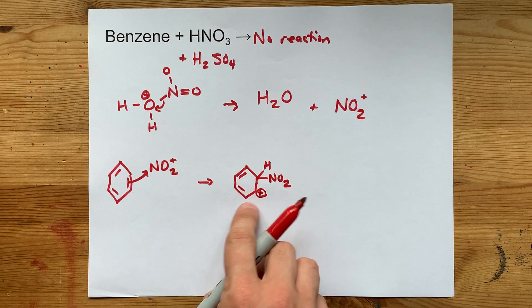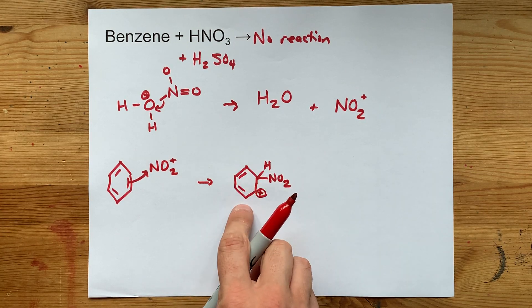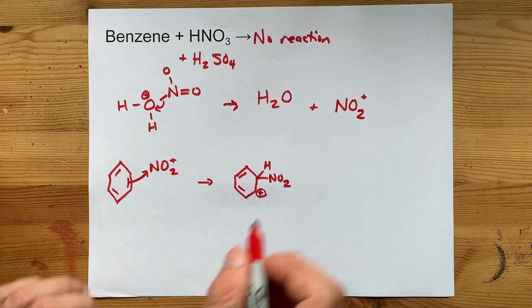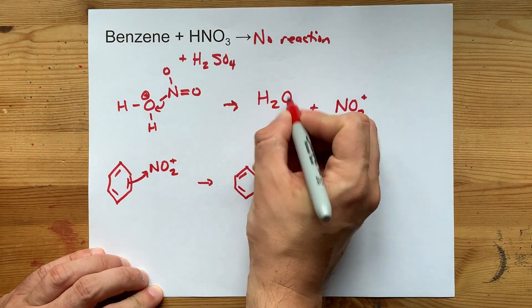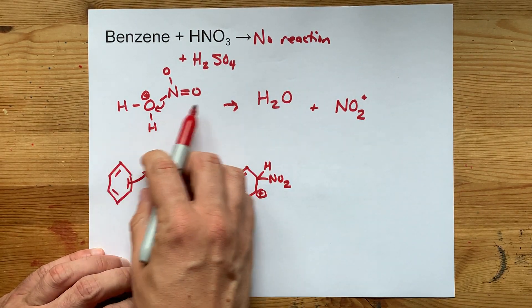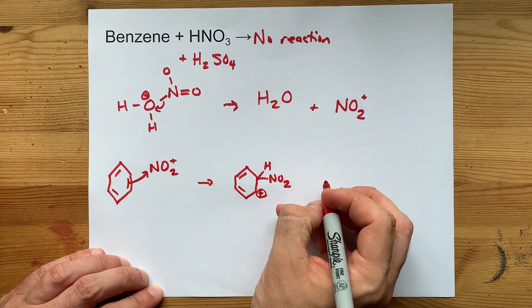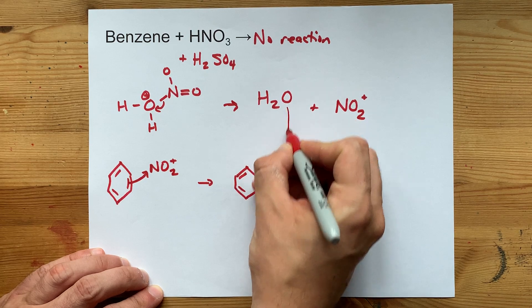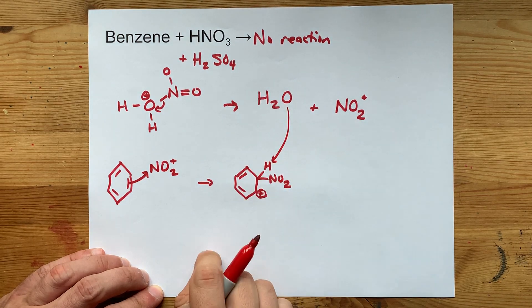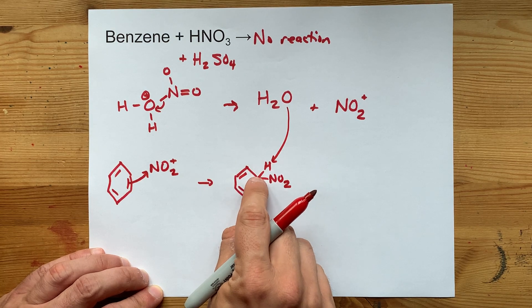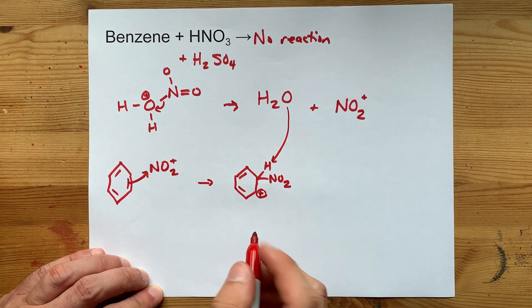Now that positive charge can be delocalized around the ring. That's why this intermediate is stable. Then the water that was formed when you created the NO2 plus ion in the first place can come in and swoop this H away. Now it takes just the H, not the electrons holding it onto the molecule.